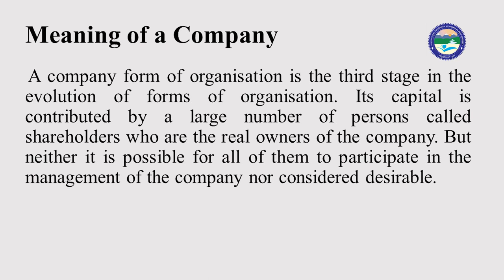First, the meaning of company. Company form of organization is the third stage in the evolution of organization. Its capital is contributed by a large number of people called shareholders. These shareholders are the real owners of the company, but none of the shareholders can participate in the management of the company because there are a large number of them in the organization. So it is not possible for all the shareholders to participate in the decisions of the management.